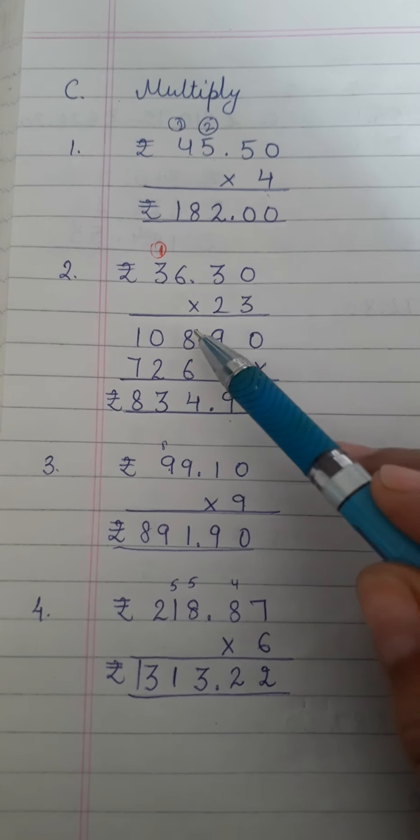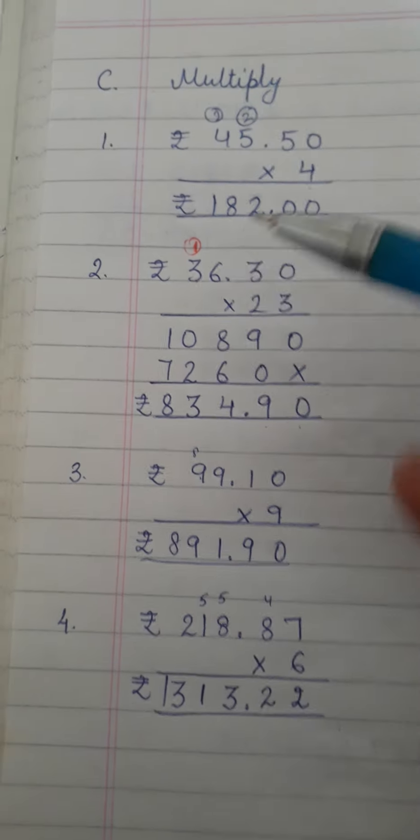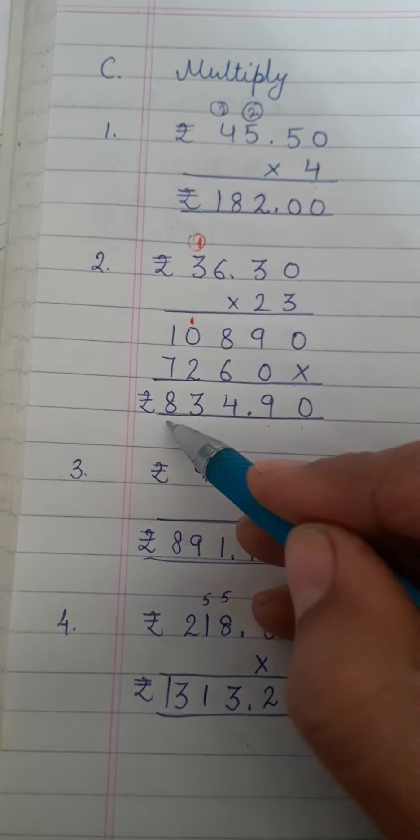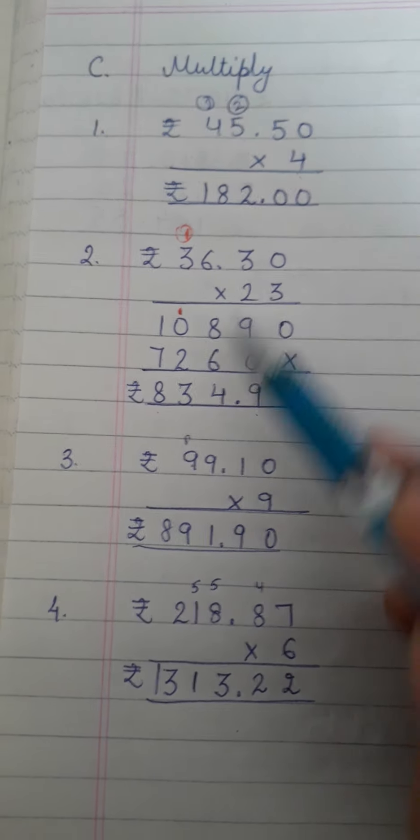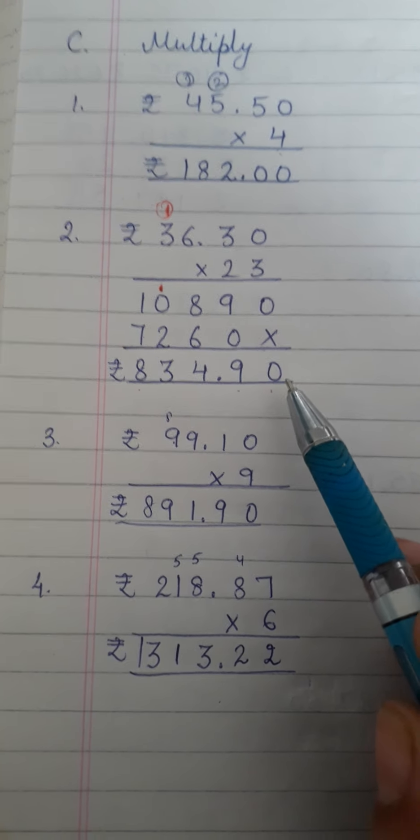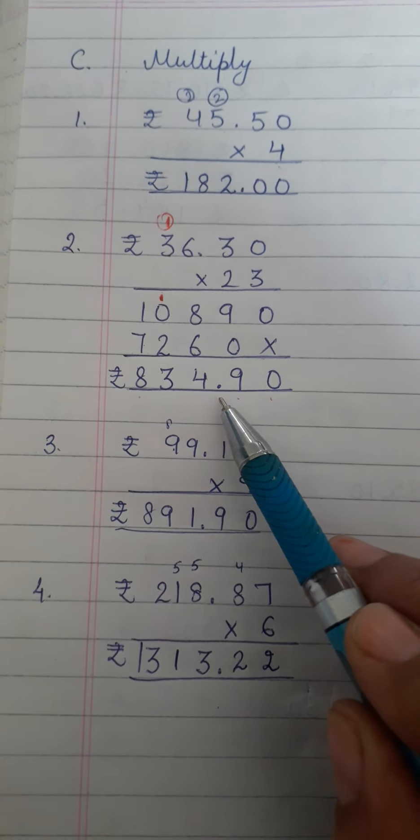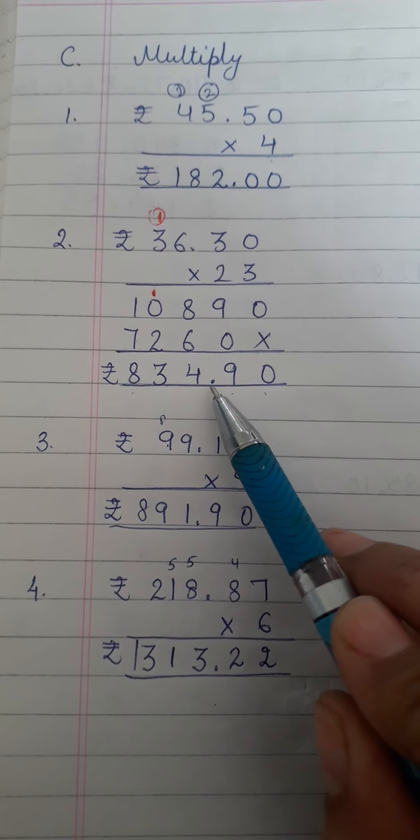Put a cross first then 2 zeros are 0, 2 threes are 6, 2 sixes are 12, carry over 1, 2 threes are 6 plus 1, 7. Now add them up 0, 9 plus 0, 9, 8 plus 6, 14, carry over 1, 2 plus 1, 3, 7 plus 1, 8. After decimal we have 2 digits. So in the answer also I will put decimal before 2 digits and I will start counting from the right side. 1, 2. After 2 digits I have to put decimal.